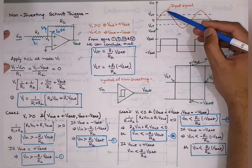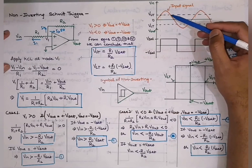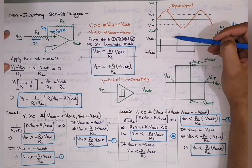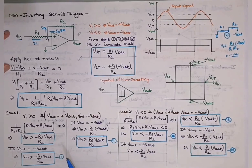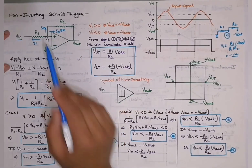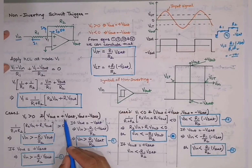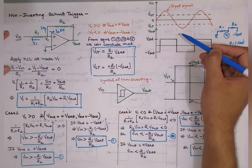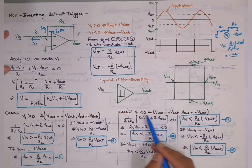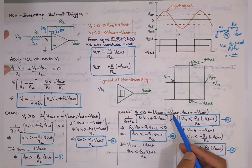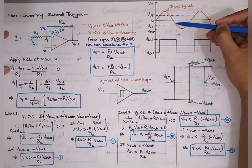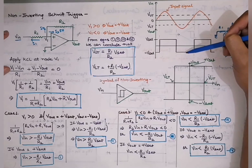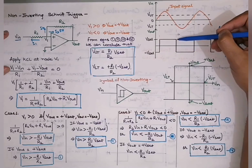In the second case, as the input decreases below the upper threshold, the output does not immediately change because Vout is still at +Vsat, keeping V1 positive. For Vout to transition from +Vsat to −Vsat, Vin must fall below the lower threshold, which is −(R1/R2)·Vsat. The output changes its state at exactly that lower threshold level.